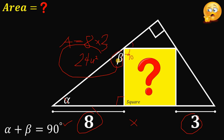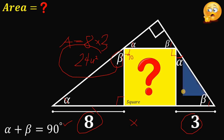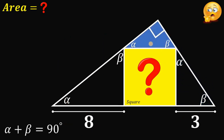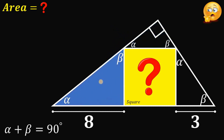So this angle plus beta must equal 90 degrees, meaning this angle right here must be alpha. And this angle is still beta. With the same reasoning — this is 90 degrees, this is beta — this angle must equal alpha, and finally this angle must equal beta. We can now see four similar triangles in this figure: these three triangles are all similar to the big right triangle.